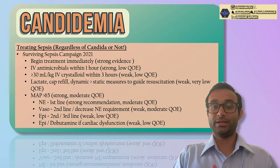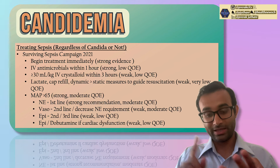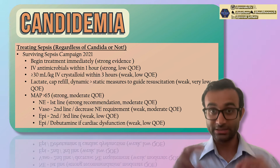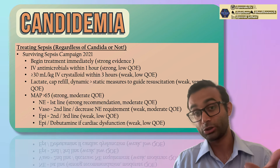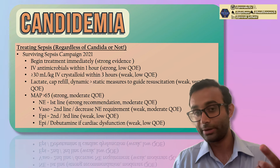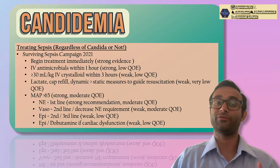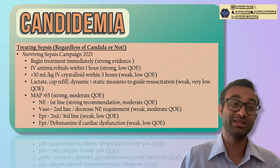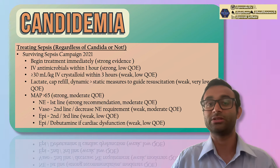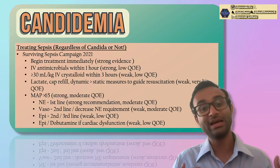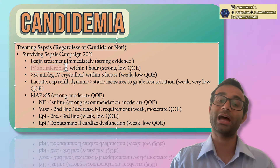Anytime you have someone with hypotension, fever, and concern for infection, you're worried about sepsis. Sepsis, broadly, is when someone has low blood pressure, a fever, or a heart rate greater than 100 without an obvious cause — often two of those three plus an elevated lactate and confusion. That constellation tells you something serious is going on. When there is concern for sepsis, you should begin treatment immediately with IV antimicrobials.